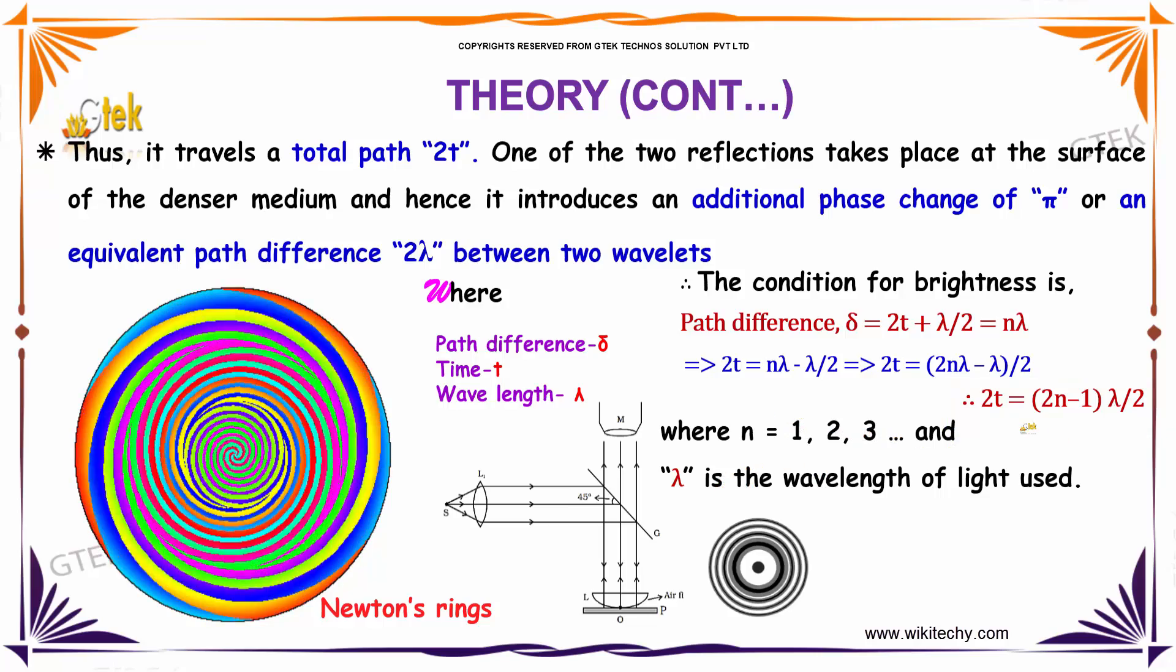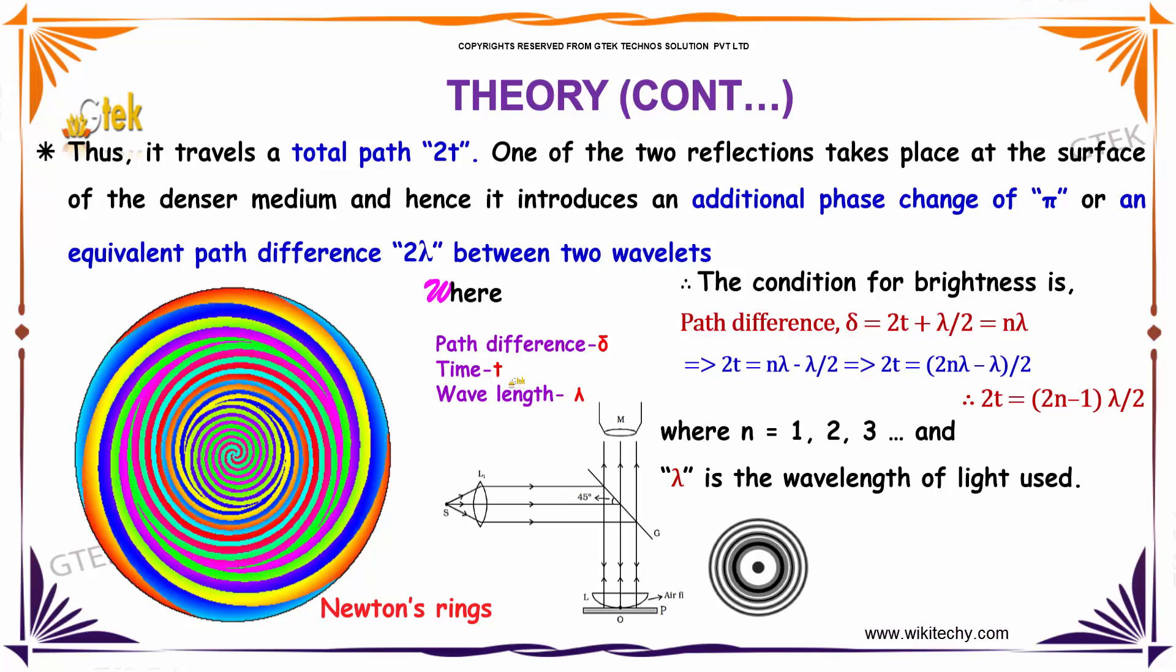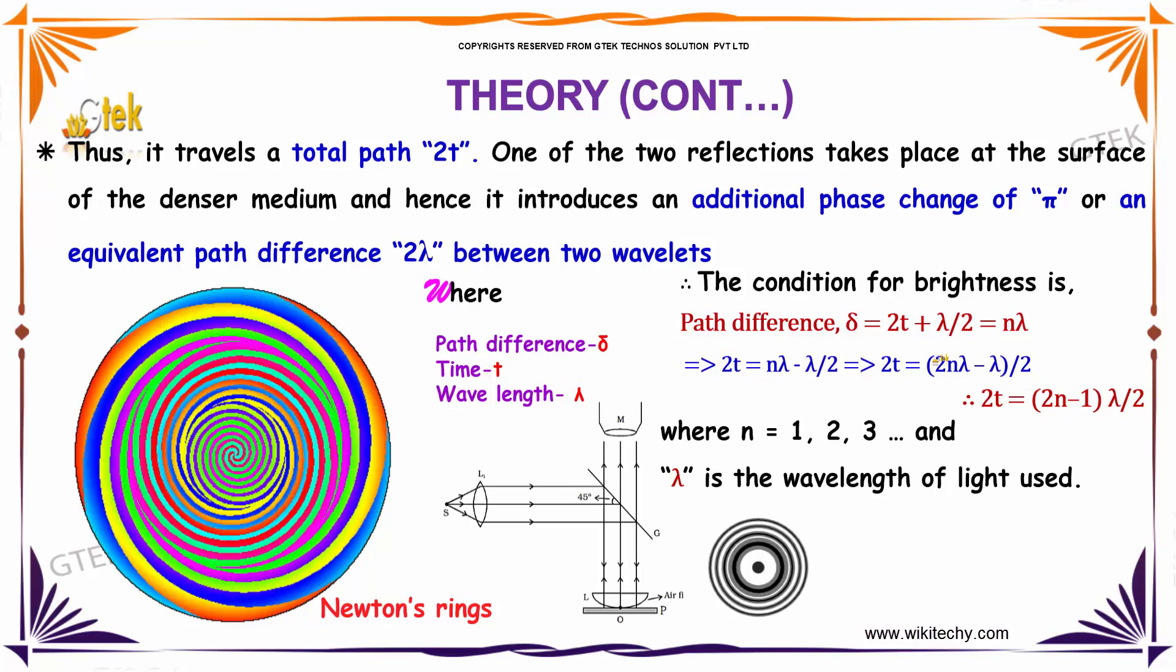Where n = 1, 2, 3, and λ is the wavelength of light used, T is the thickness, and path difference is δ.